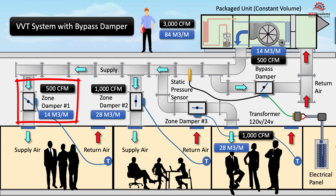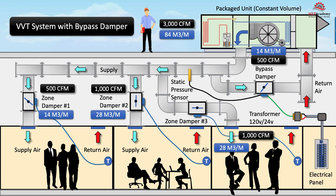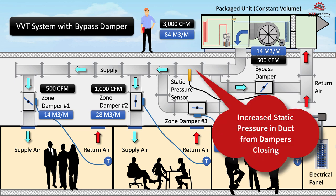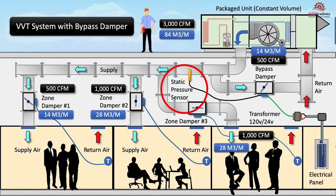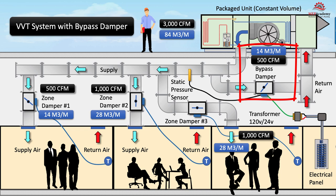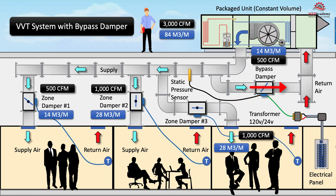If the controller for zone damper number one requires less air and the damper modulates down to deliver only 500 CFM (14 cubic meters per minute), then only 2500 CFM (70 cubic meters per minute) of the total air is needed by the zones. As zone damper number one modulates to partially closed, the pressure in the supply duct increases. The static pressure sensor sends a signal to the bypass damper controller to modulate open, allowing the excess 500 CFM to pass from the supply air to the return air duct without entering any of the zones.